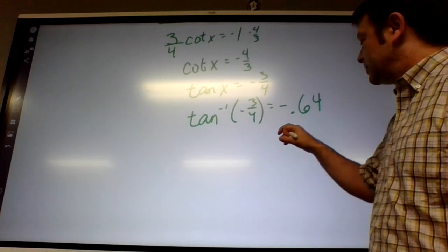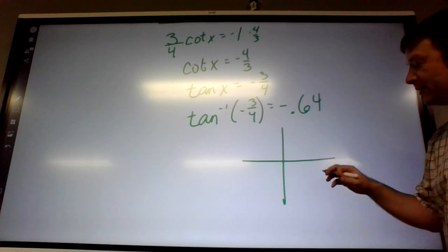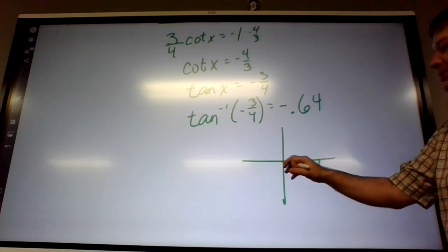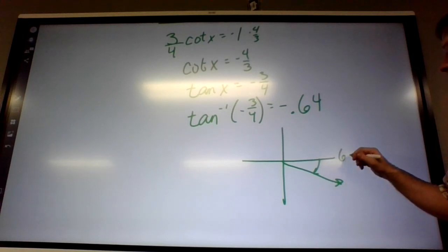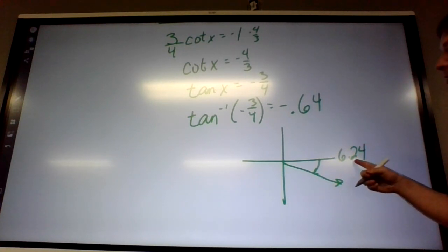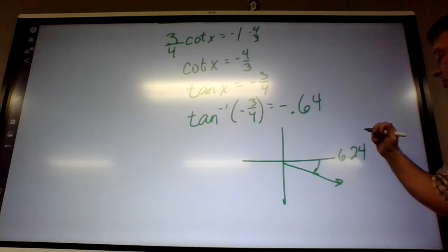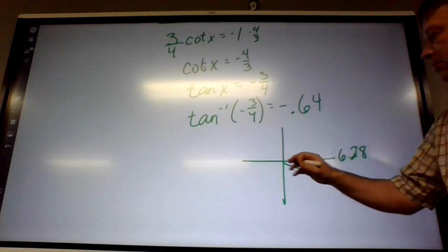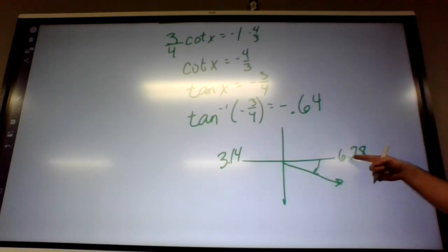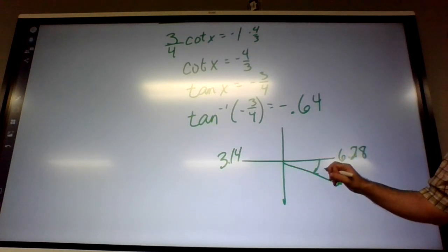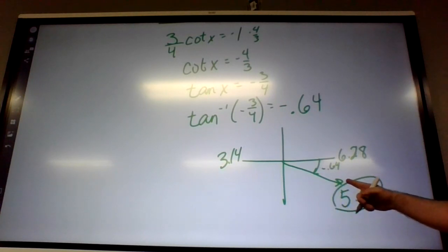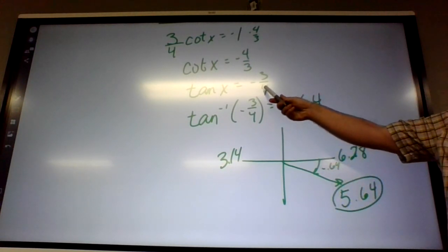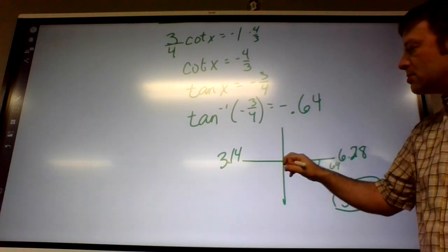So, they gave us a negative angle. Negative 0.64. That's somewhere in the fourth quadrant. To find the positive version of that angle, we're going to do 6.28 minus 0.64. That's the fourth quadrant version. Where else is tangent equal to something negative? Third quadrant, or second quadrant.